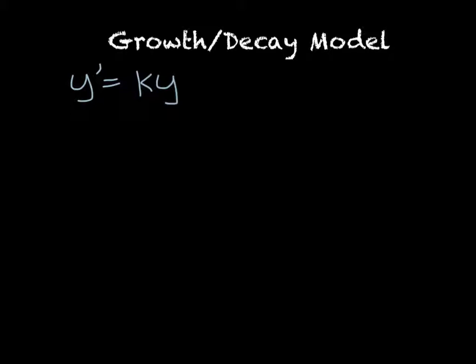We have something really similar for our decay model, except that in our decay model, our k value is going to be negative. So that gives us a solution of y equals c times e to the power of negative kx. Often decay is used to model things like radioactive decay. And so you could have something like the mass is equal to the mass in the beginning times e to the power of negative kt.